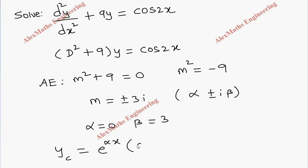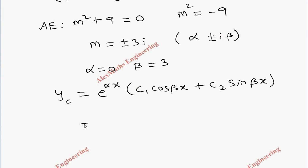Now from this we get the complementary function as e^(alpha x) into c1 cos(beta x) plus c2 sin(beta x). Let's substitute the value of alpha and beta. Alpha is 0 so the first term is 1, so we're left with only c1 cos 3x plus c2 sin 3x.